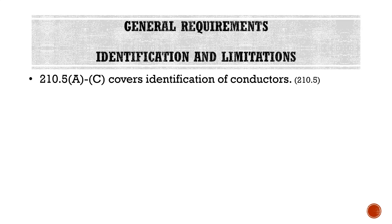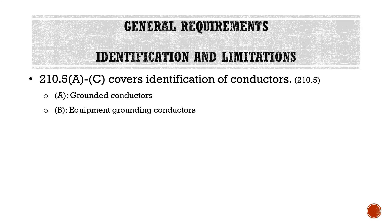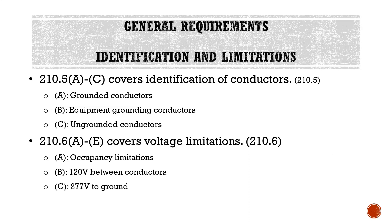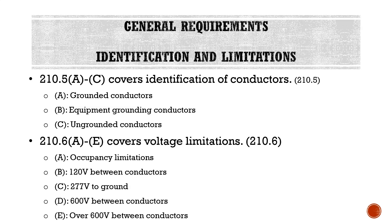Starting into Article 210, some general requirements cover identification and limitations. Sections 210.5A through C cover identification of conductors, including grounded conductors, equipment grounding conductors, and ungrounded conductors. Section 210.6A through E covers voltage limitations for different occupancies: 120 volts between conductors, 277 volts to ground, 600 volts between conductors, and over 600 volts between conductors.